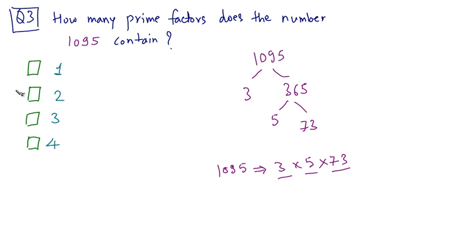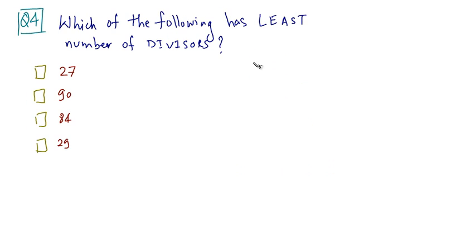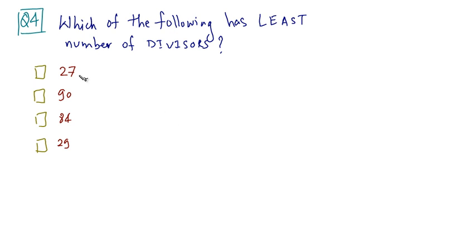So our answer is option C. Now for the final question, question 4: which of the following has the least number of divisors? It is asking you the number which has the least number of factors. Let's find out the prime factors of each and every number.